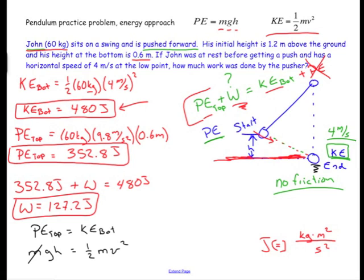So this would have been a PE top would have been MGH is equal to one half MV squared. The M's would cancel here and that's where you get this equation that is on your equation sheet that looks like this. So if I solve that for V I get square root of 2GH.